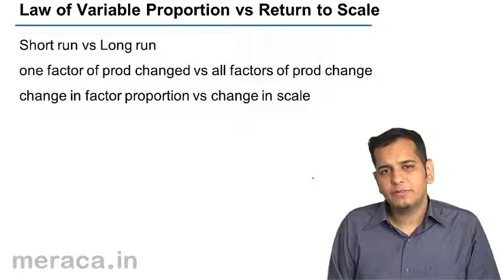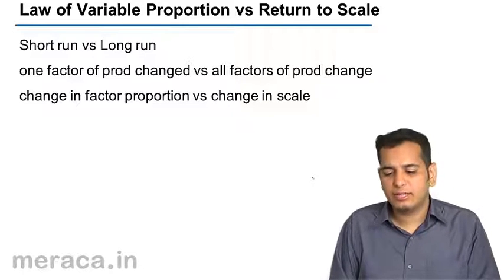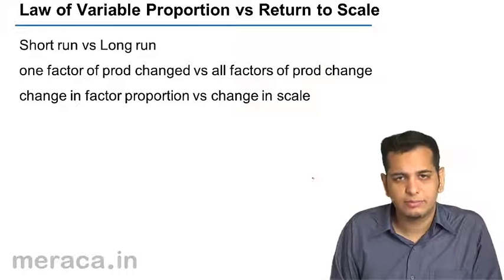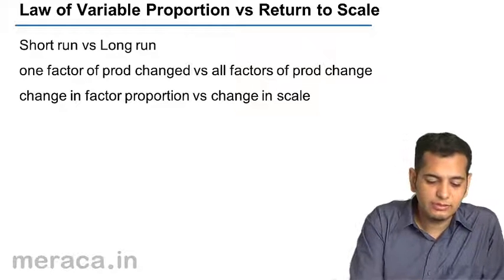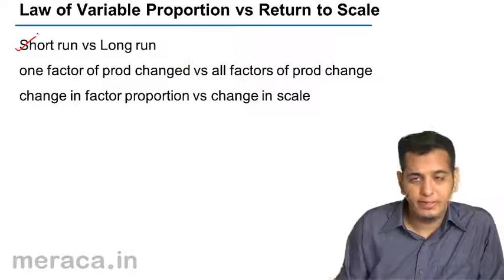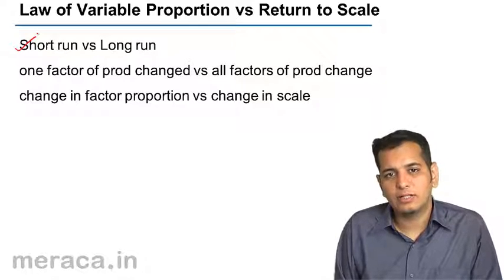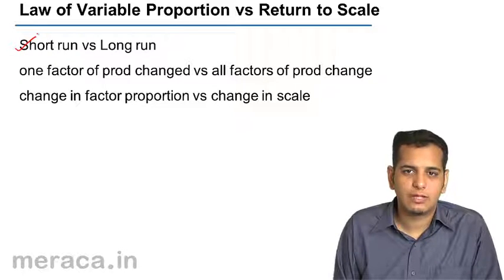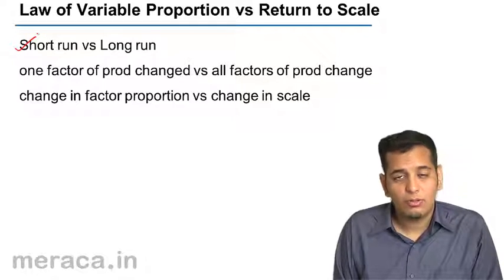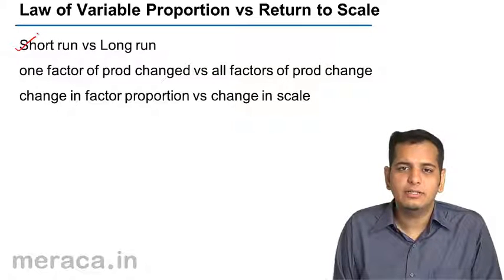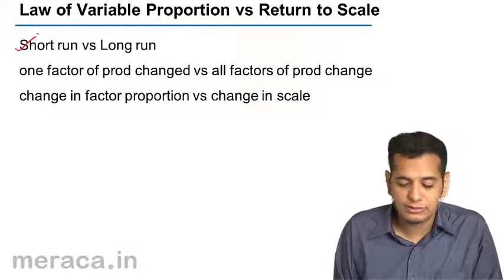What is the difference between the law of variable proportion and the law of returns to scale? The first difference is that the law of variable proportion operates under the short run, whereas the law of returns to scale operates under the long run.